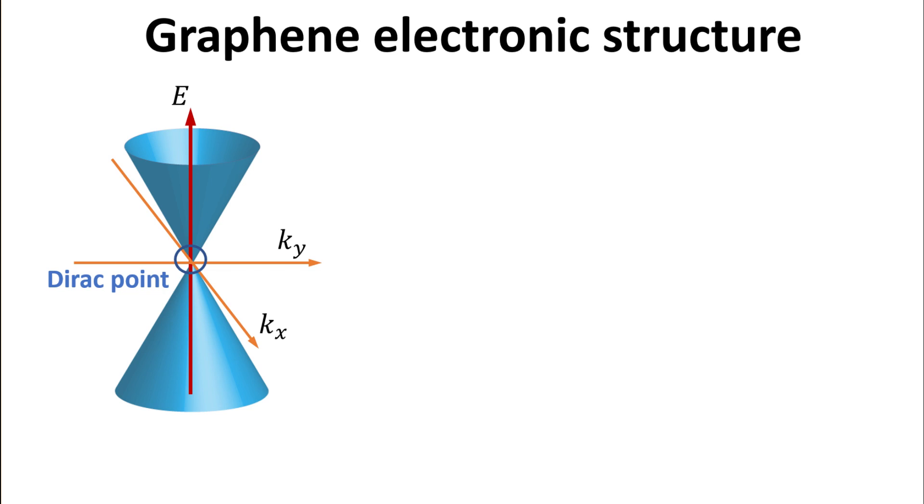The electronic structure of graphene at the two in-equivalent kappa and kappa prime valleys can be described by Dirac cones as shown. We refer you to our previous videos on the calculation of the electronic structure of graphene in this series.